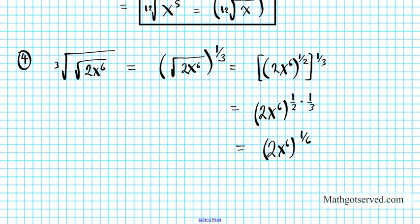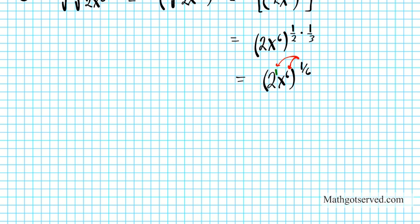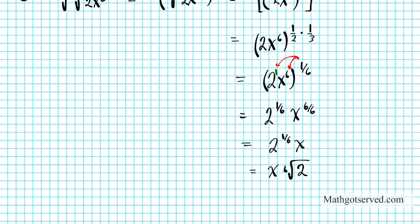Now we have a power of a product scenario. We distribute 1/6 to all terms: 2 gets an implied exponent of 1, and x has an exponent of 6. Distributing gives 2 to the 1/6 times x to the 6 times 1/6, which is x to the 6/6, simplifying to x to the 1, or just x. Then 2 to the 1/6 can be expressed as the 6th root of 2 using the nth root property. So the final result is x times the 6th root of 2.